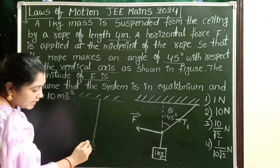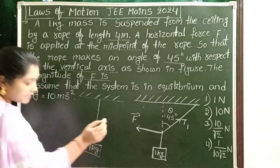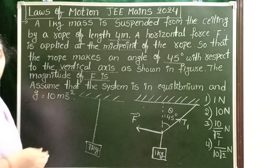A mass is attached to this rope. Mass is 1 kg. This is the initial position of the rope.